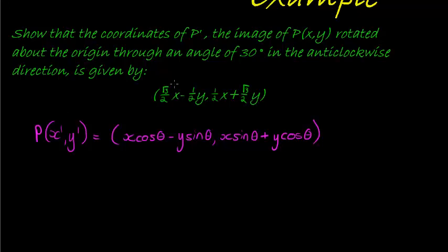And all I now simply do is substitute. So, I substitute, x is my original coordinate, my original coordinate is just x, so that stays x. Cos of theta is now just cos of the angle, which is 30 degrees.